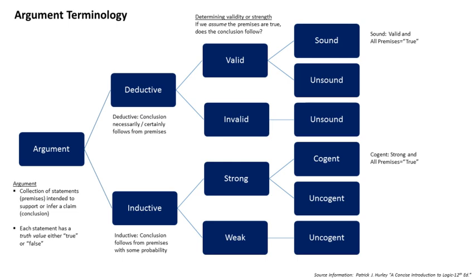A prediction draws a conclusion about a future individual from a past sample. Proportion Q of observed members of group G have had attribute A; therefore, there is a probability corresponding to Q that other members of group G will have attribute A when next observed.